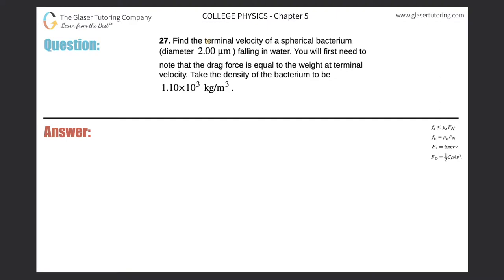Number 27. Find the terminal velocity of a spherical bacterium whose diameter is 2 micrometers falling in water. You will first need to note that the drag force is equal to the weight at terminal velocity. Take the density of the bacterium to be 1.10 times 10 to the 3 kg per meter cubed.